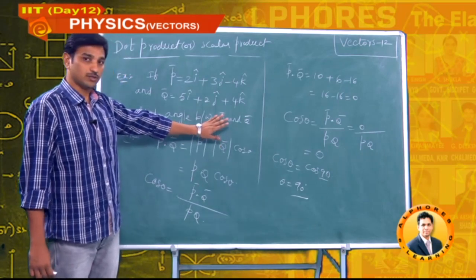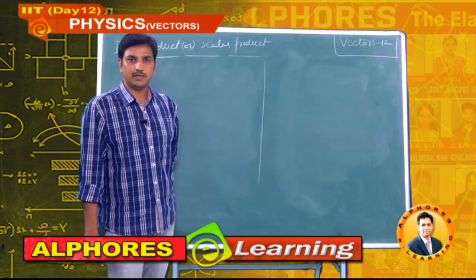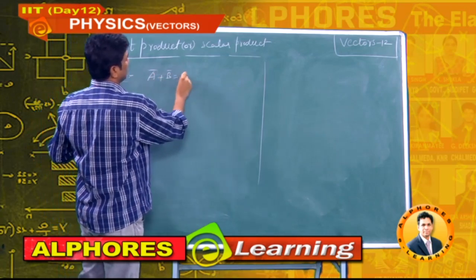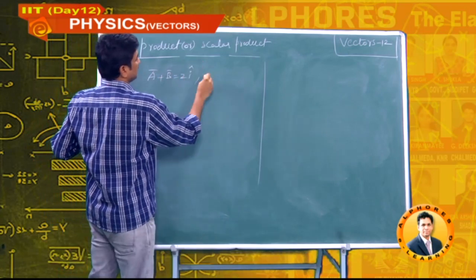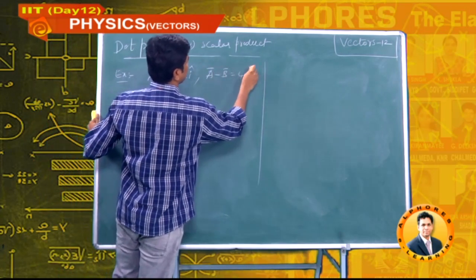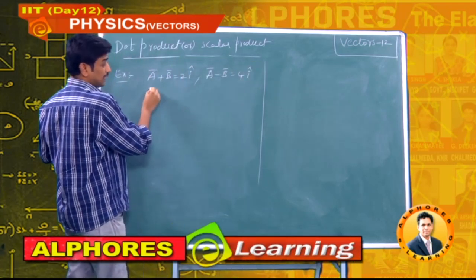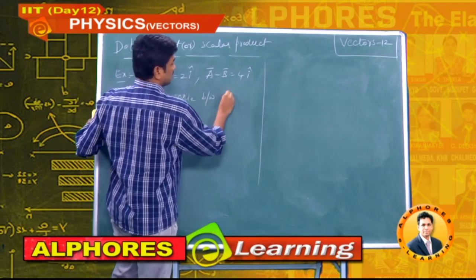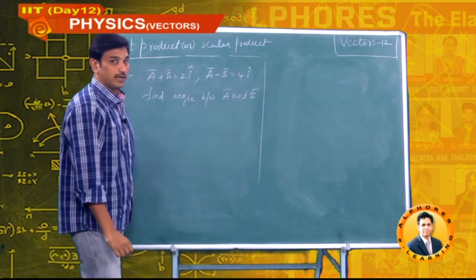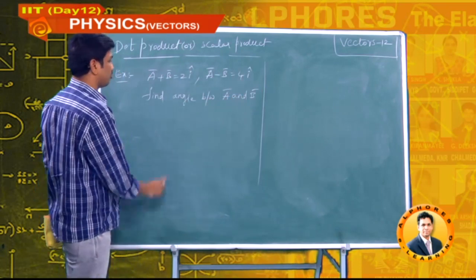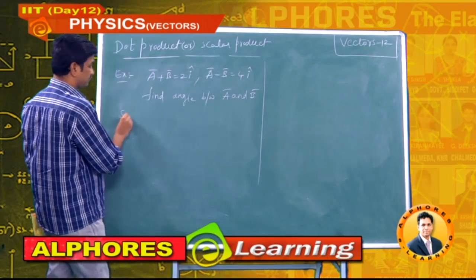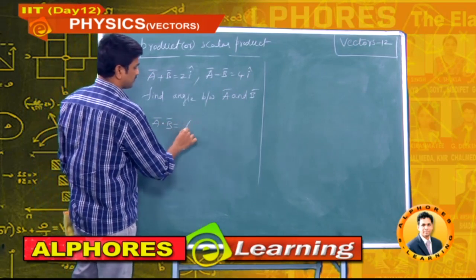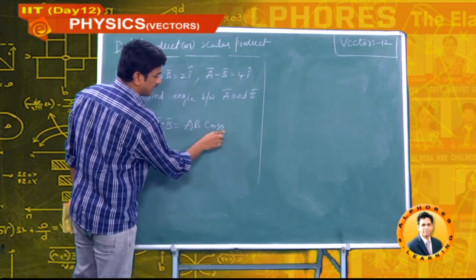One more example: ā + b̄ = 2î and ā − b̄ = 4î. They are asking us to calculate the angle between ā and b̄. The dot product formula is ā · b̄ = ab cosθ, where θ is the angle between a and b.